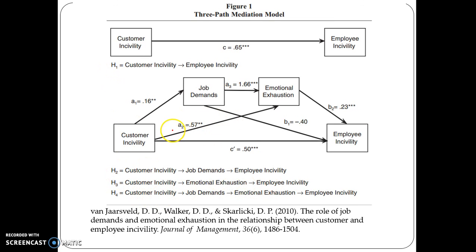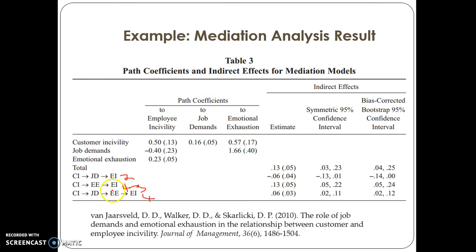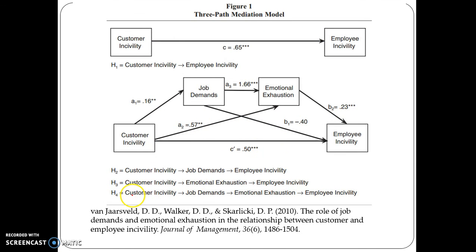If you compare this particular value with the simple mediation effect of 0.13, this one has a lower value. The confidence interval shows 0 is not included between the lower and upper limit in both cases — symmetric 95% confidence interval as well as bias-corrected bootstrap approach. They found support for H4 and H2 and H1. They found a significant relationship between customer incivility and job demand, but an insignificant path coefficient for one route, which is why they could not obtain a significant indirect effect for H3.